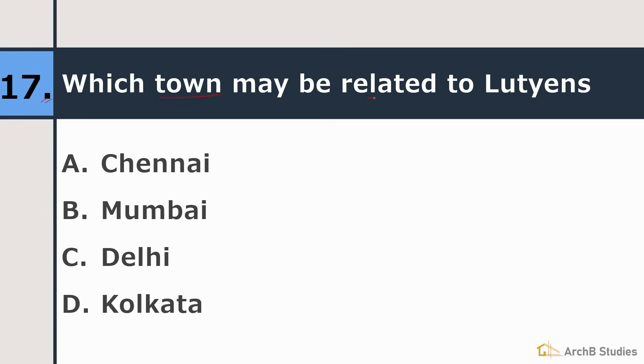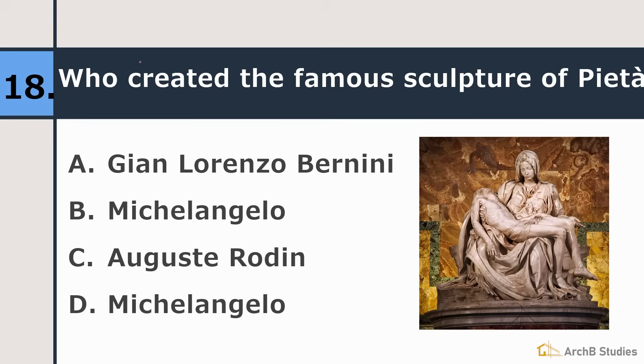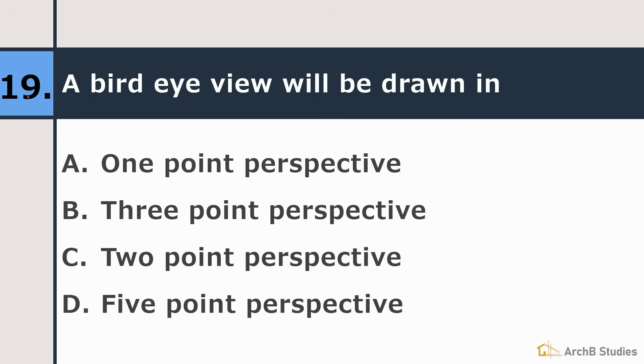17th question. Which town may be related to Lutyens? Chennai, Mumbai, Delhi, Kolkata. The right answer is Delhi. Why is it so? So Edwin Lutyens was the architect of many of the buildings in Delhi. And he also planned some part of Delhi. So that's why we call Delhi as the Edwin Lutyens Delhi. 18th is who created the famous sculpture of Pieta? Gian Lorenzo Bernini, Michelangelo, Augusto Rodin. The right answer is Michelangelo. 19th, a bird's eye view will be drawn in one point perspective, three point perspective, two point perspective or five point perspective. Right answer is three point perspective.